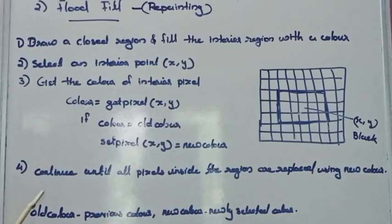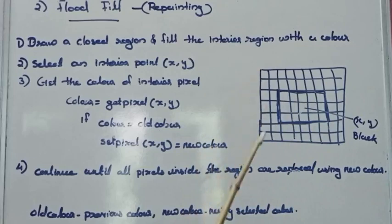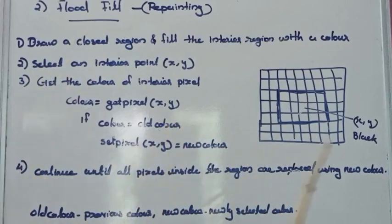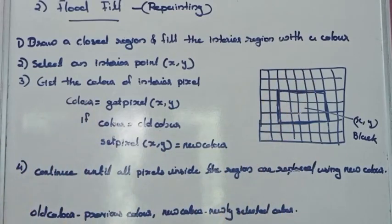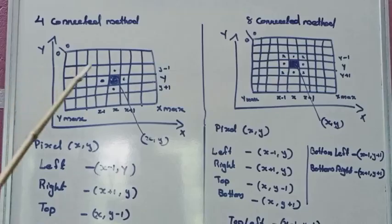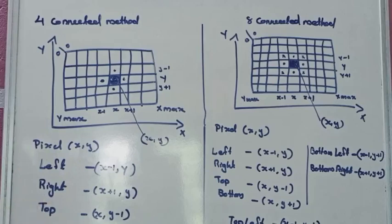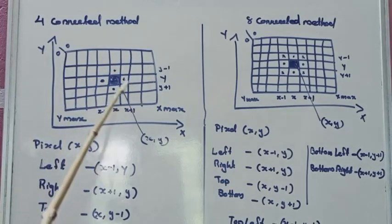We will continue until all pixels inside the region are replaced using the new color. When we select this region, we will fill with the same color. We will repeat this step. If we select the seed pixel, we will use the same color. How to select the next pixel — if we select the seed pixel, we will use the same color.